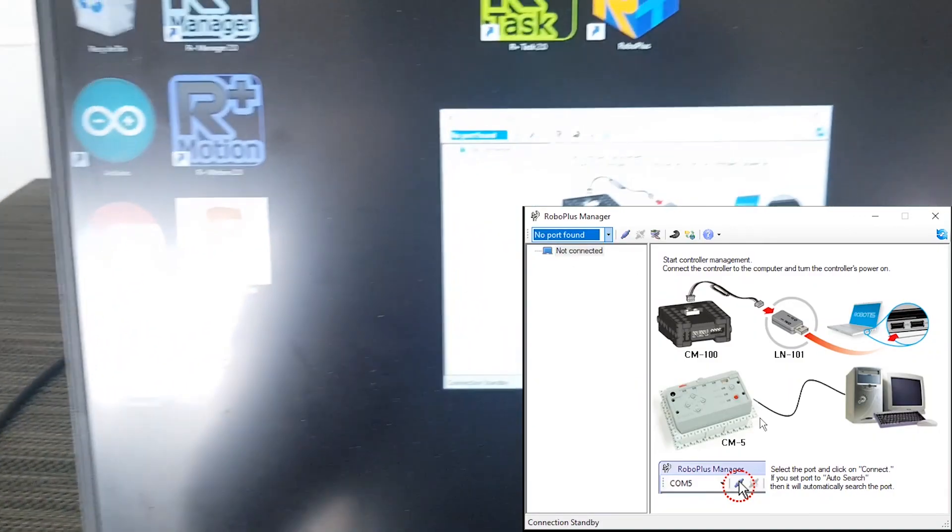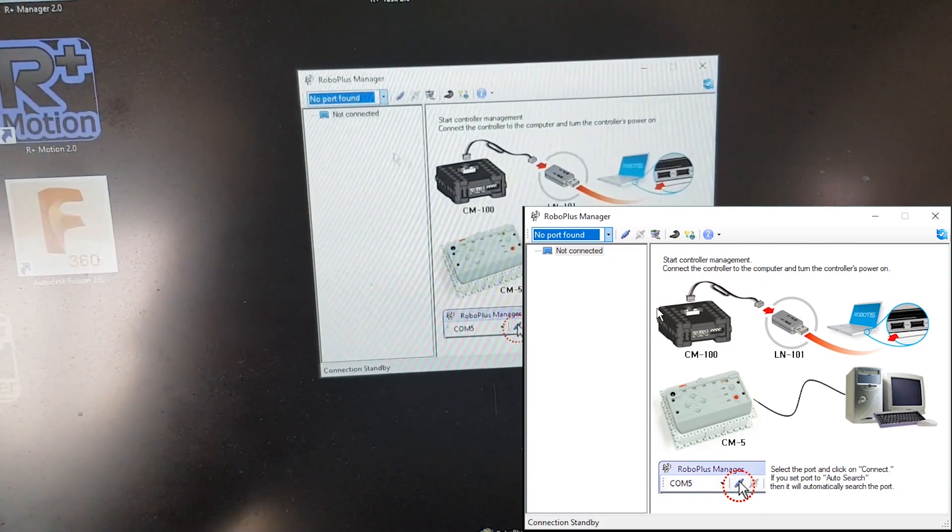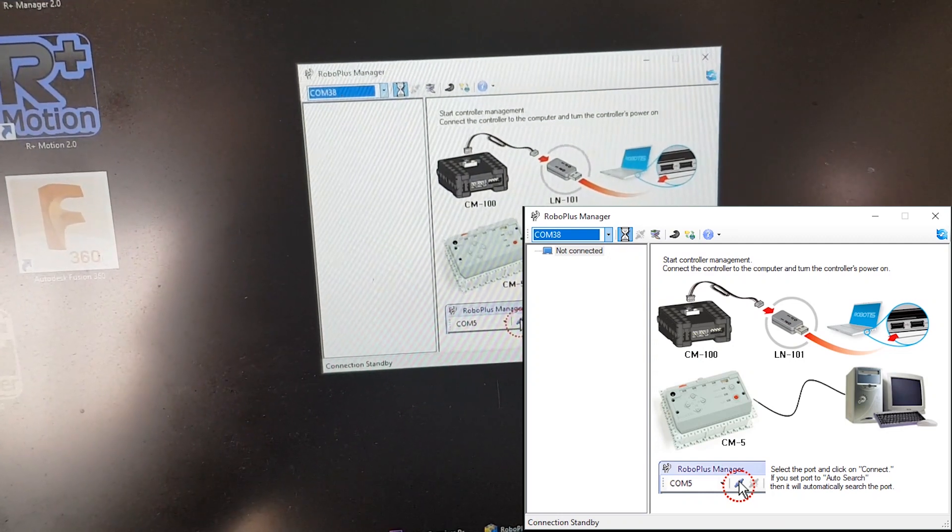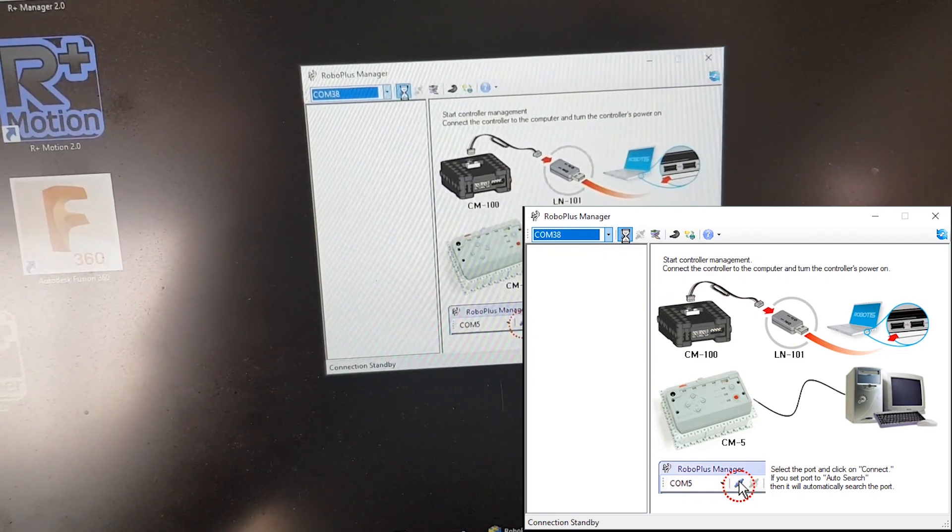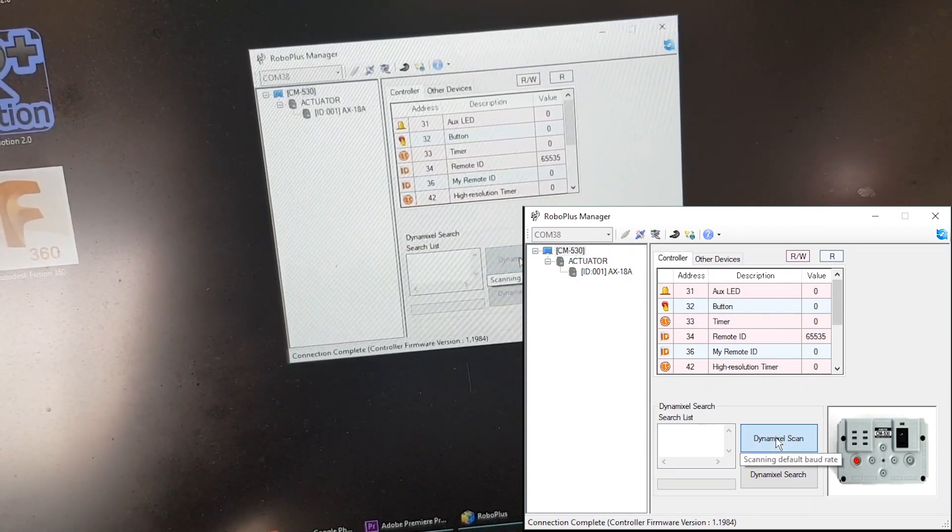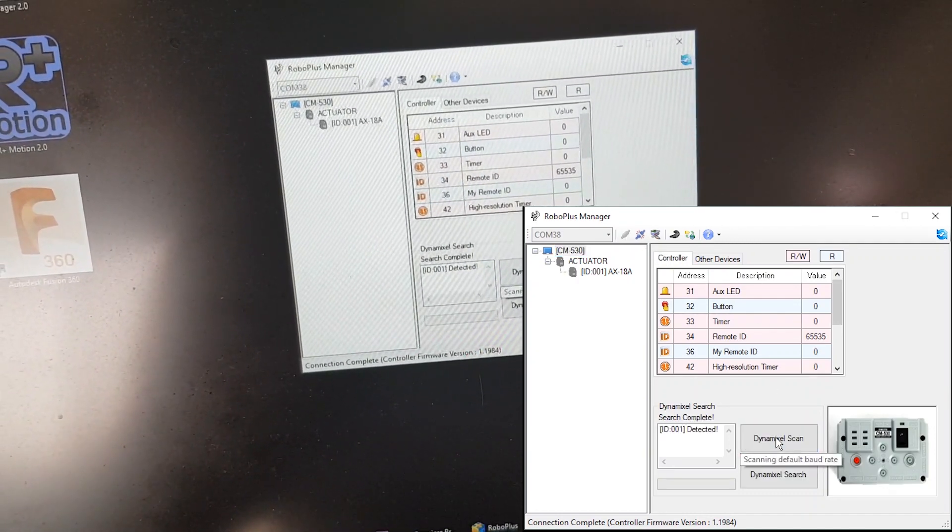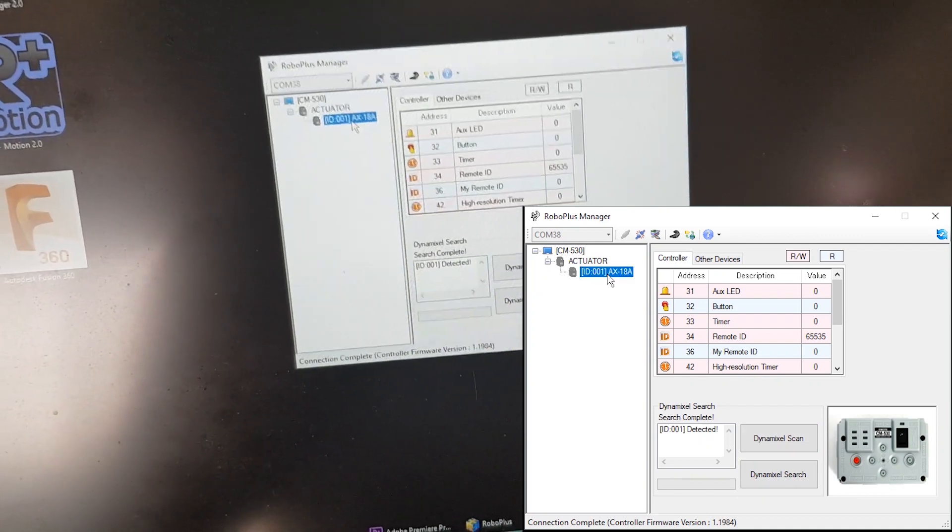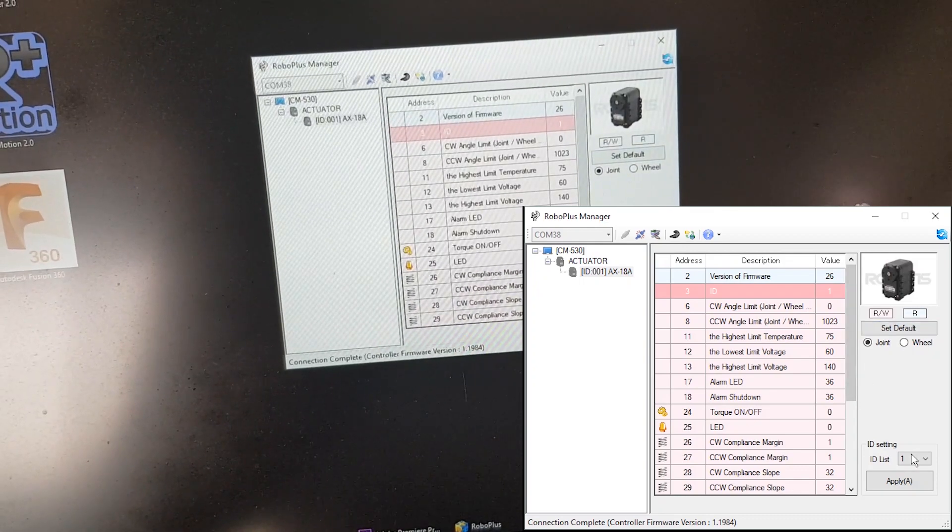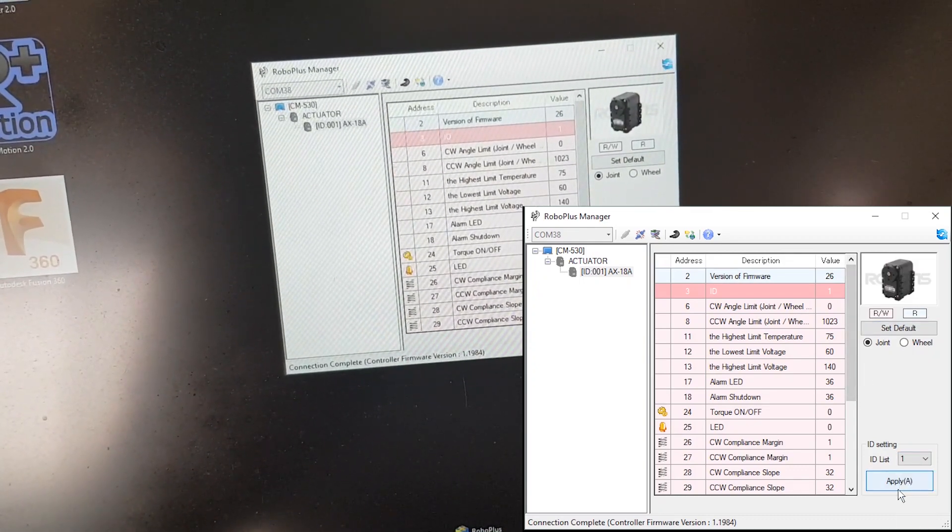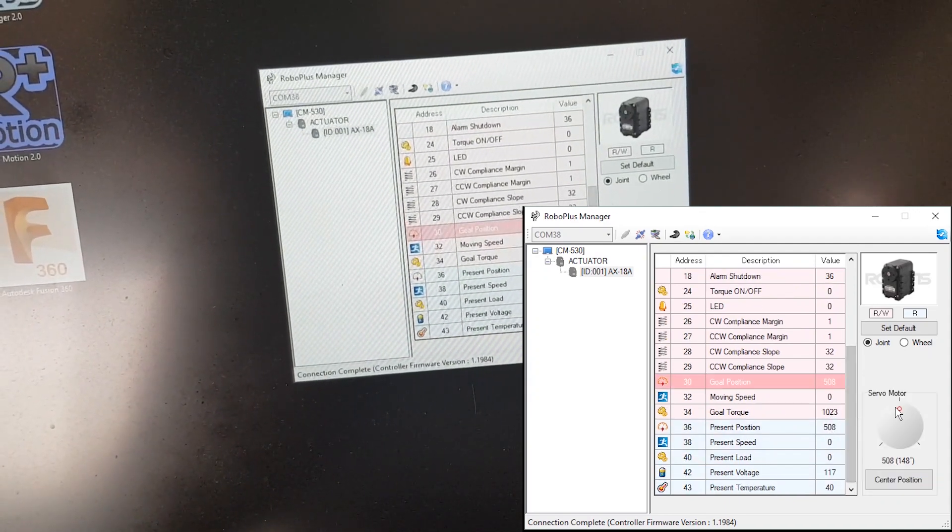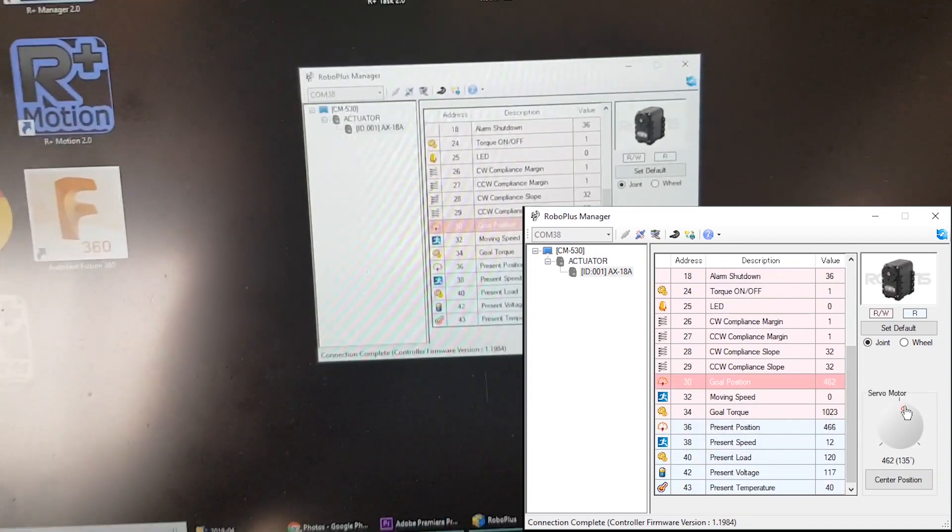Basically, in order to use the servo motor, we need to change its ID number. I changed the ID number to number one. I used Roboplus Manager for it. The robot company called Robotis is very good at this kind of thing. You may refer to the website. You can also test it like this instantly.